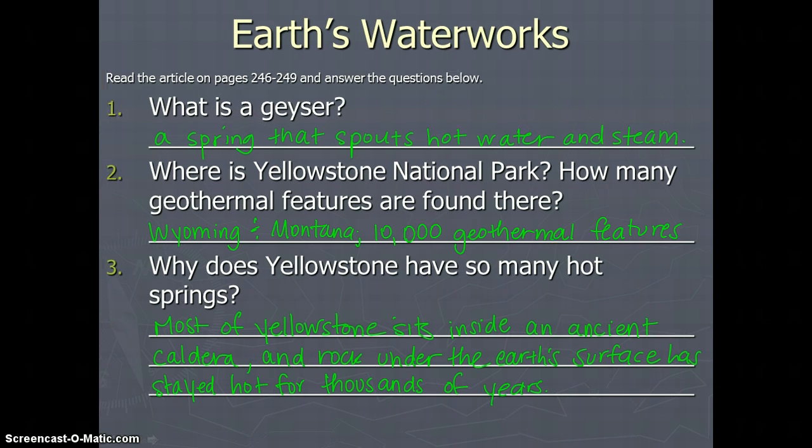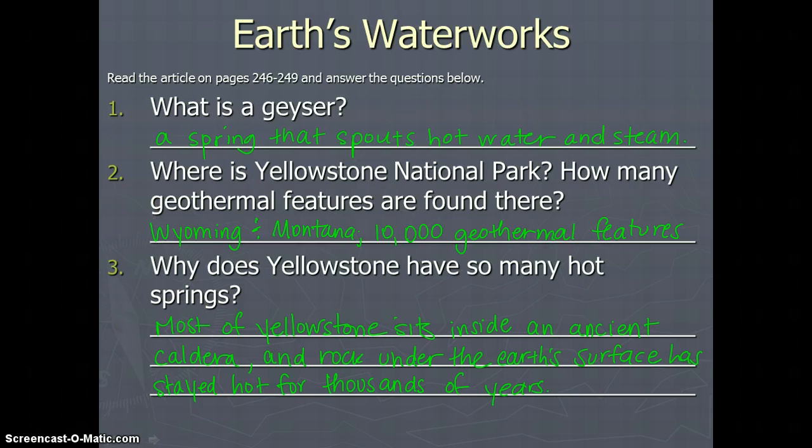The rest of this lesson is two articles that you read about. One was Earth's Water Works, and this talks about the different water features that can be created from ancient heat underground or magma chambers underground. And so a geyser is a spring that spouts hot water and steam, and that water is heated from magma deep underneath the Earth.